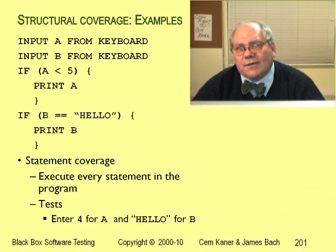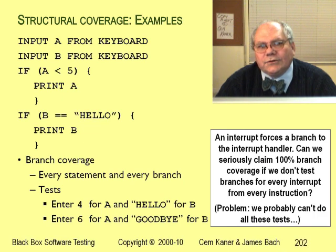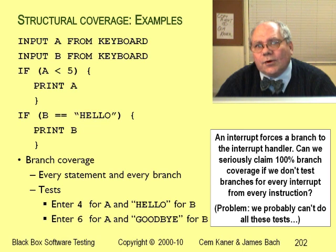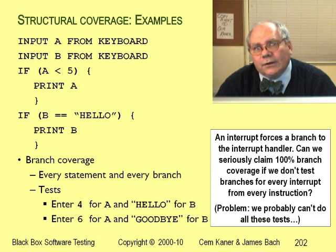You achieve 100% statement coverage if you test every statement in a program. In this example program, we can achieve 100% statement coverage with one test. You achieve branch coverage if you test every statement and every branch. In this little program, it takes two tests to achieve 100% branch coverage. For the variable B, we need two tests: one where B is "hello" and one where B isn't. If B is "hello," the program does something special; if B is not "hello," we don't execute the code written for that case. So it's a different branch.